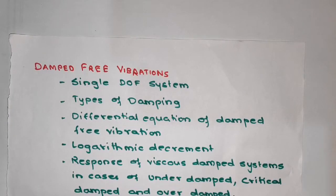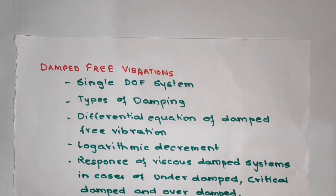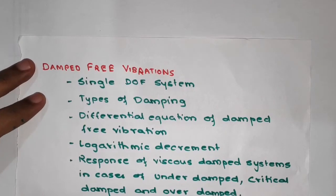The next chapter is damped free vibrations. Here we will be seeing what is a single degree of freedom system, the different types of damping, and the differential equations of damped free vibration — similar to how we derived the differential equations of undamped free vibration. We will also see the logarithmic decrement and the response of a viscous damped system in three cases: under-damped, critically damped, and over-damped.